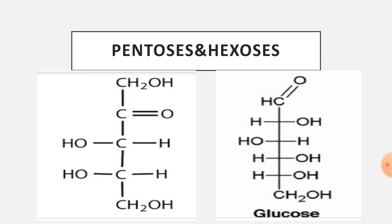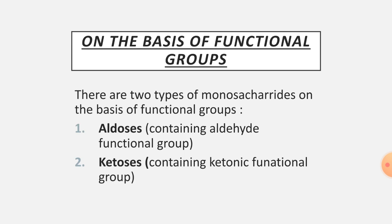For glucose, which is a hexose, there are 6 carbon atoms. Carbon 1 has the aldehydic functional group. Carbon 2 has –OH on the right side. Carbon 3 has the configuration with hydrogen on the right. Carbon 4 has –OH, and carbon 5 also has –OH, with the last carbon being –CH₂OH. The second type of classification for monosaccharides is based on functional group: aldoses contain an aldehydic functional group, while ketoses contain a ketonic functional group.